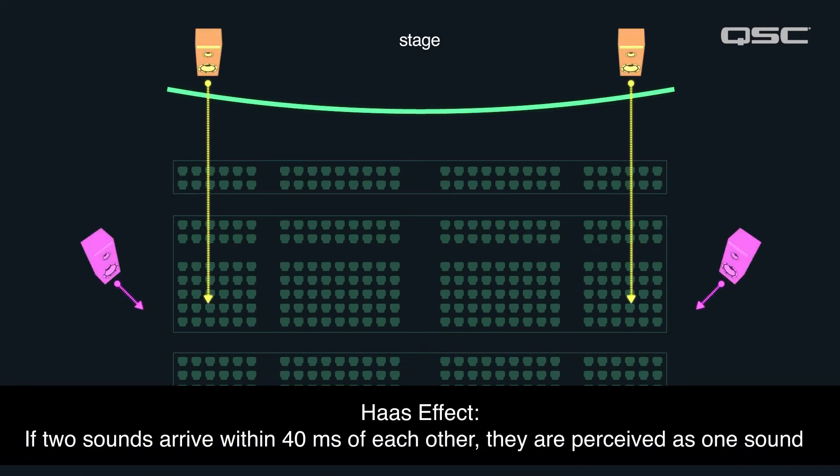The Haas effect will be covered more in another video. The main thing to know is that properly delaying your fill loudspeakers will dramatically improve the clarity of your overall PA, and allow for proper localization of each musician and sound source, which will greatly enhance the experience for the audience.